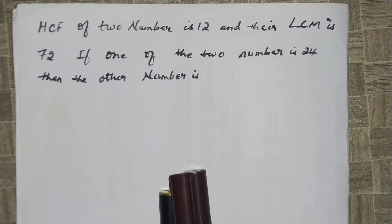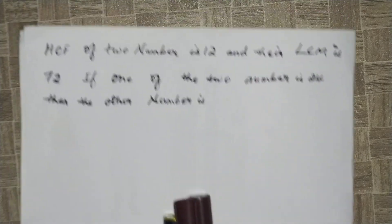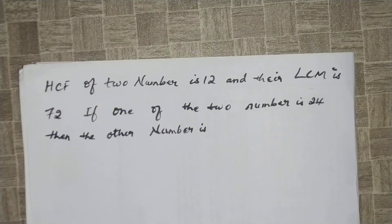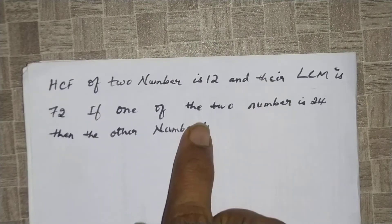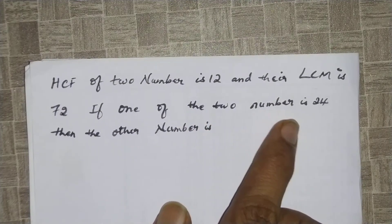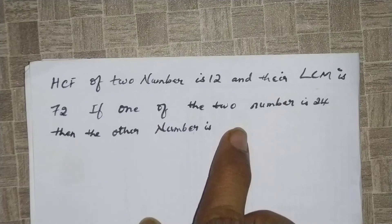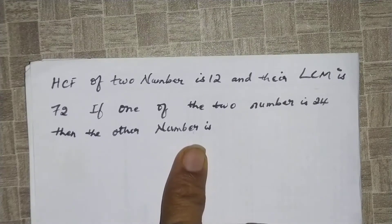Welcome to Creative Learning. Before we begin, subscribe to the channel for future updates. In this video, I will show you how to solve problems of HCF and LCM. Here is the question: HCF of two numbers is 12 and their LCM is 72. If one of the two numbers is 24, then the other number is?